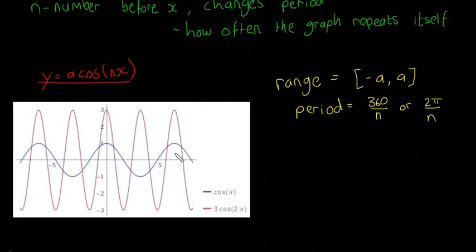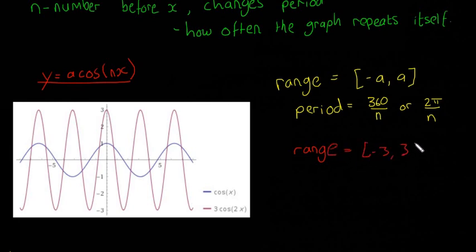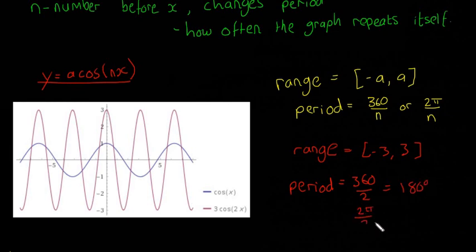The 2 in 3cos(2x) means it repeats itself twice in the time it takes for the blue one to repeat itself once. The range is minus a to a, so whatever number is before the sine or cos gives the range — how high or low it goes. The number before x gives the period: 360 divided by n, or 2π divided by n in radians. For this graph, the range is minus 3 to 3, and the period is 2π divided by 2, which is π radians.